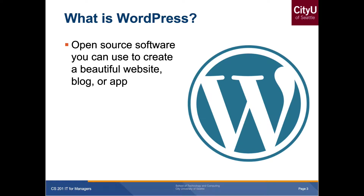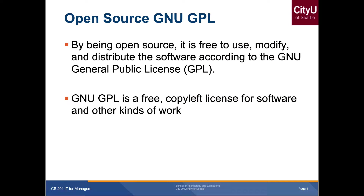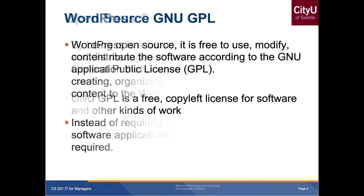So what is WordPress? It's an open source software that you can use to create a beautiful website, blog, or app. Open source means you can view the code, and with this license you can use that software. It's free to modify and distribute under the GNU GPL license, which is one of the less restrictive open source licenses.